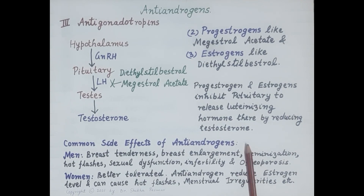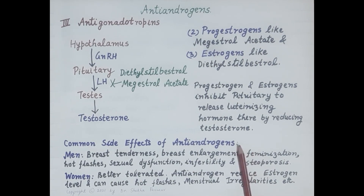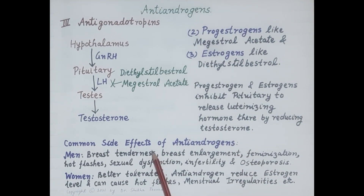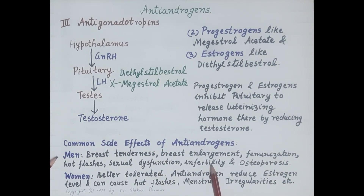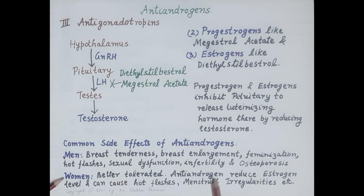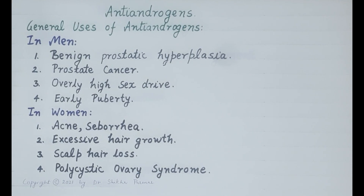Regarding side effects of anti-androgens: testosterone in the body is converted to two bioactive metabolites — dihydrotestosterone and estradiol. Anti-androgens reduce levels of testosterone, DHT, and estradiol in the blood, and this reduced availability is responsible for common side effects. In men, common side effects include breast tenderness, breast enlargement, feminization, hot flashes, sexual dysfunction, infertility, and osteoporosis. In women, anti-androgens are better tolerated.